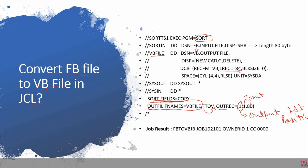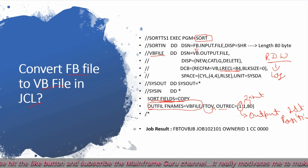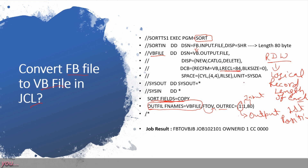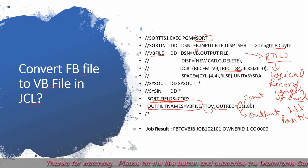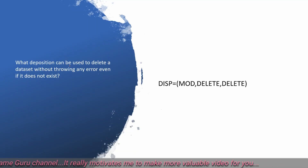The LRECL should be 84 because the first four bytes are RDW — Record Descriptor Word — which contains the logical record length of each record. So although the input file has 80 bytes, we give 84 because it includes the RDW. When the job is submitted, it completes with return code 00.